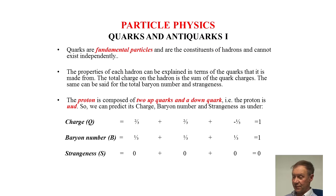Charge is plus a third, plus a third, plus a third equals one. Baryon number is a third, a third, a third is one. And strangeness is nought, nought and nought, of course, throughout.